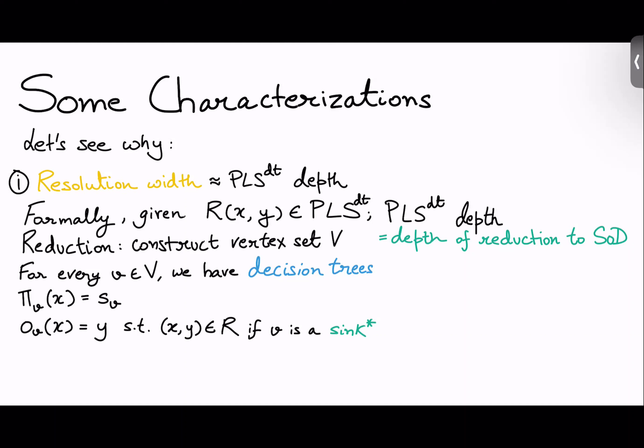I put a star on the sink because sinks are not exactly verifiable. How do you check that there is nothing mapping to it if you don't have a reversible edge? So solutions are actually defined as vertices which map to themselves. Okay. So you just have to go one step back in the path. And formally, PLS depth is now log of the vertex set size, that is going to be n, plus the maximum depth of any successor decision tree.